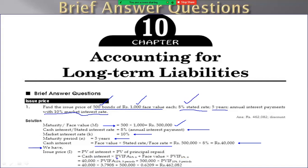PBIFA uses the market rate, which is 10%. So PBIFA is at 10%, n=5 years. Plus face value of 500,000 into PBIF at 10%, n=5 years.